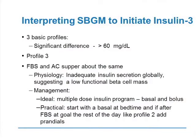The third profile: both fasting and supper sugars are all high. This person truly has a global insulin deficiency. Ideally, you would use multiple-dose insulin — basal insulin once a day and prandial insulin with each meal. Practically, you start with a basal at bedtime, and after the fasting sugar is at goal you look at the rest of the profile and add prandials accordingly. You can start someone with basal at bedtime targeting fasting down to 120 to 140, then if pre-lunch goes to 160, pre-supper to 180, and bedtime to 200, you know prandials are needed. You can start all prandials at once or start with the biggest meal and slowly transition.